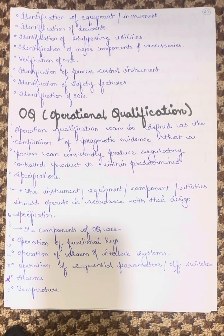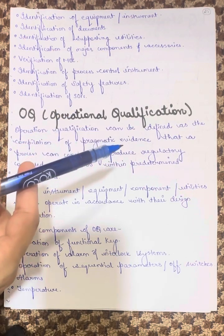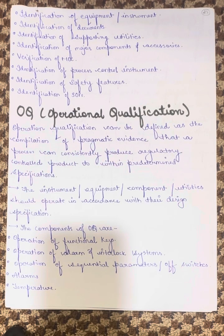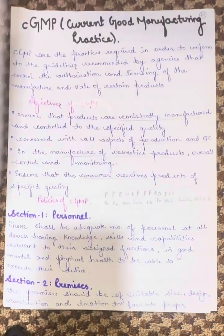We have Operational Qualification. OQ can be defined as the compilation of pragmatic evidence that a process can consistently produce a regulatory controlled product within pre-determined specification. The instrument, component and utility should operate in accordance with the design specification. Components of OQ are: operation of the functional keys, alarm, interlock system operation, operation of sequential parameters or the off switches, alarms, and the temperature that is to be maintained.